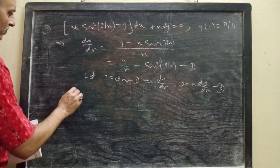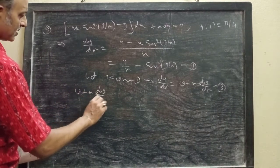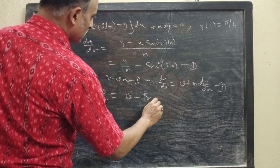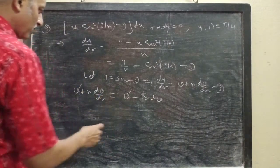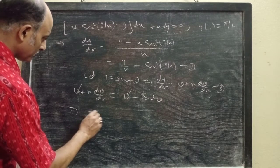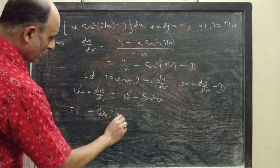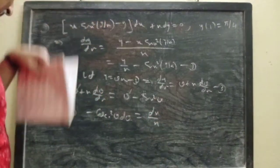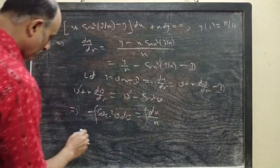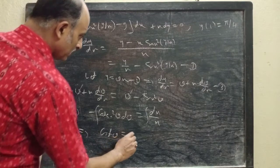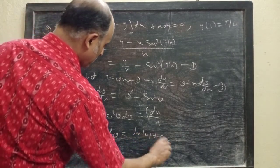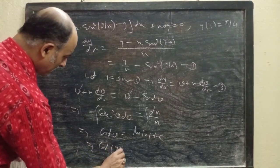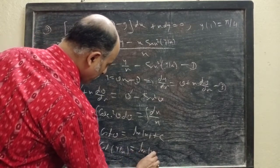From equations 1, 2, and 3 we have v plus x·(dv/dx) equals v minus sin²(v). Cancel v from both sides and you get minus cosec²(v)·dv equals dx/x. Now integrating both sides, you get cot(v) equals ln|x| plus c. Now replace v by y/x, so you get cot(y/x) equals ln|x| plus c.